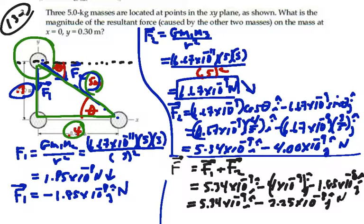This is going to be 5.34 times 10 to the minus 9 i minus 2.25 times 10 to the minus 8 j. That is our net force in IJK form. If we continue this, we want to find the magnitude of this force. So we square the components, add them together.